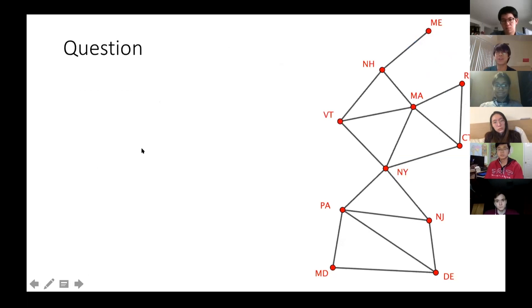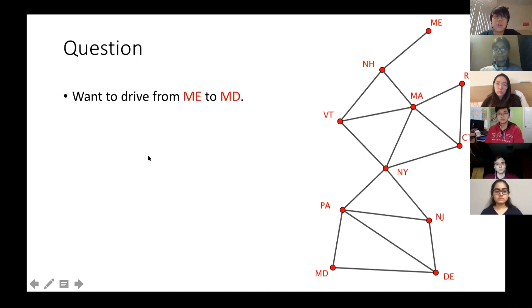I have another question for you. On the right, I have a graph whose nodes are some states in the US: Maine, New Hampshire, Massachusetts, and many more. The edges represent that there is a road that connects two nodes together. For example, this edge is a road that connects Maine and New Hampshire. This edge is a road that connects Vermont and New York. Basically, you can view this graph as a map with states and roads that connect states together. Here's my question: you want to drive from Maine to Maryland, which is this circle to this circle. To use a road, you need to pay $1 for each road you take. What is the cheapest route you can take?